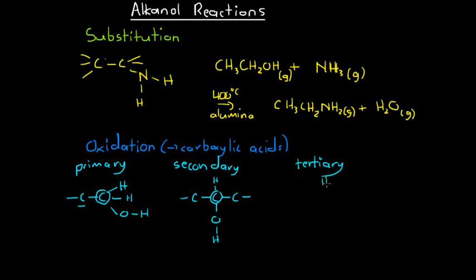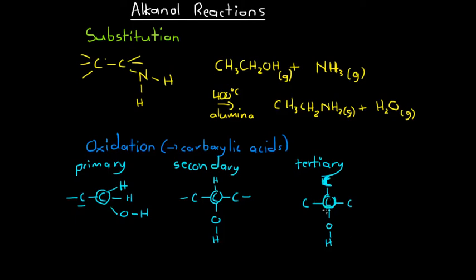For a tertiary alkanol, the hydroxyl group is bonded at a junction of carbons — the carbon bearing the hydroxyl group is bonded to three other carbons. So to summarise: primary alkanols have their hydroxyl group at the end of a carbon chain; secondary alkanols have it in the middle; and tertiary alkanols have it at the junction of multiple carbon chains. The terms primary, secondary, and tertiary — or one, two, three — refer to the number of carbons that the hydroxyl carbon is bonded to.